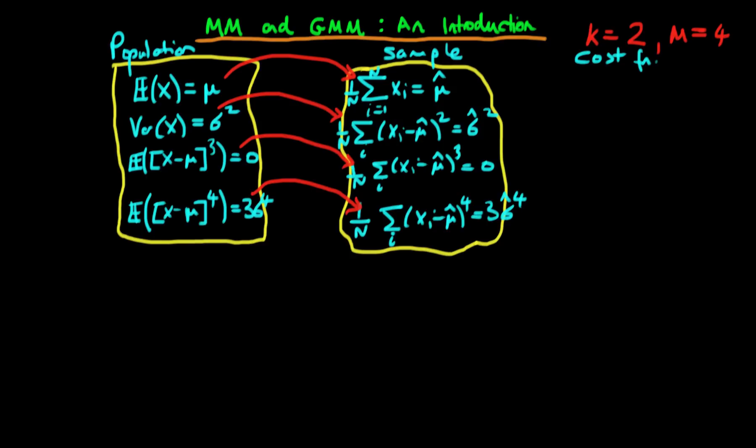So for the first case here we derived something which we called g1, which was equal to the difference between one over n times the sum of xi minus mu hat. We did the same for g2, which was one over n times the sum of xi minus x bar.